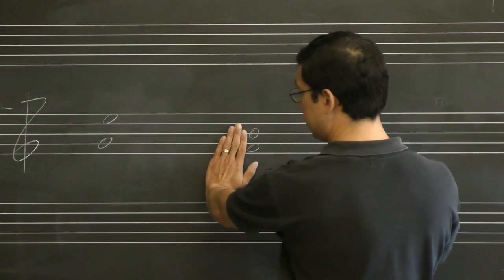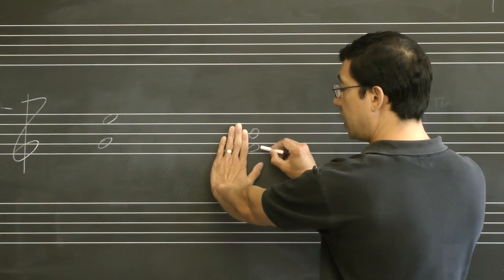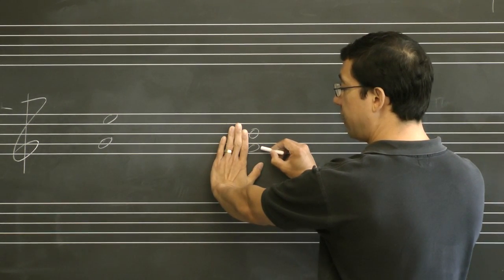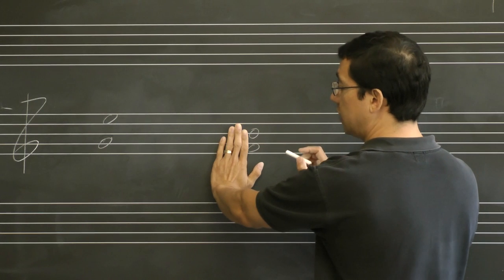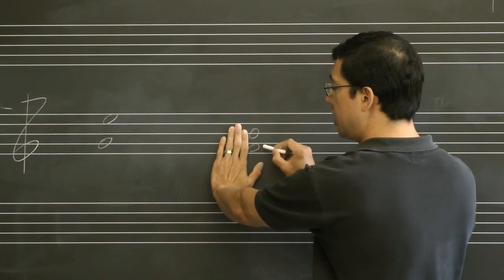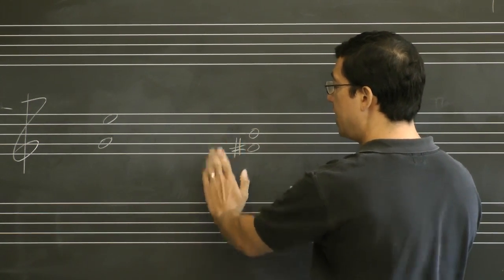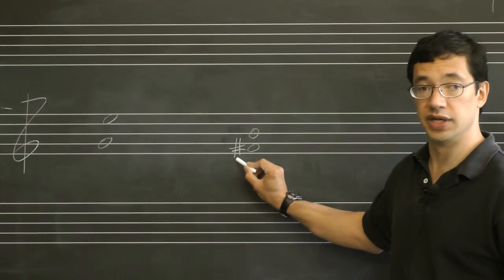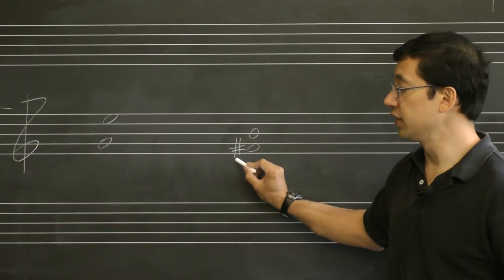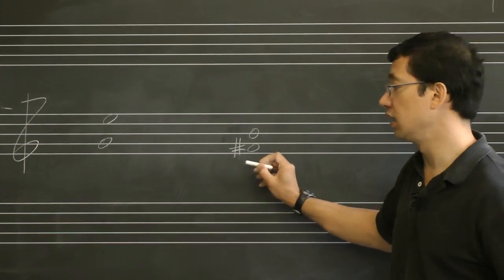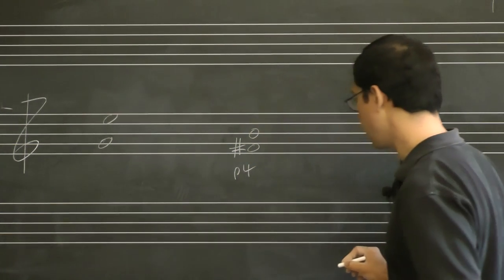So imagine that that's not there. What kind of fourth is it from F up to B? Well that's what I said you should have as the prerequisite that you should just be able to see and know, augmented fourth. Now I've raised the lower note. So the interval that's one half step smaller than augmented fourth is a perfect fourth.